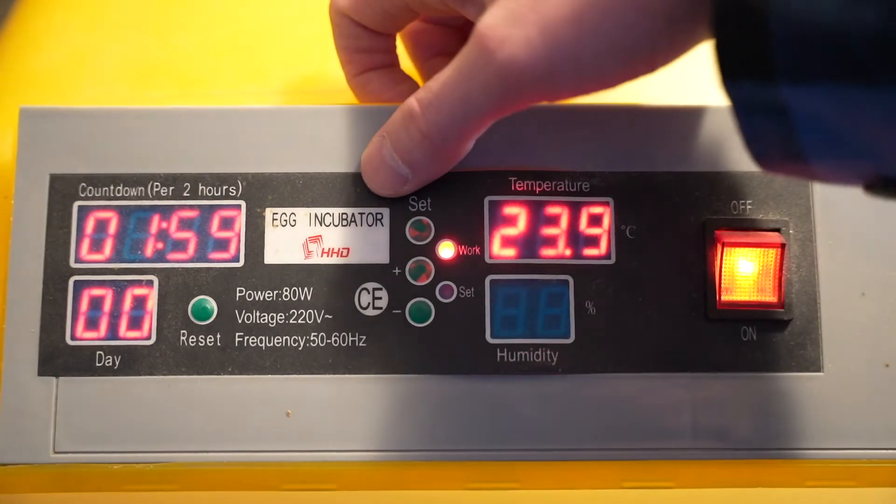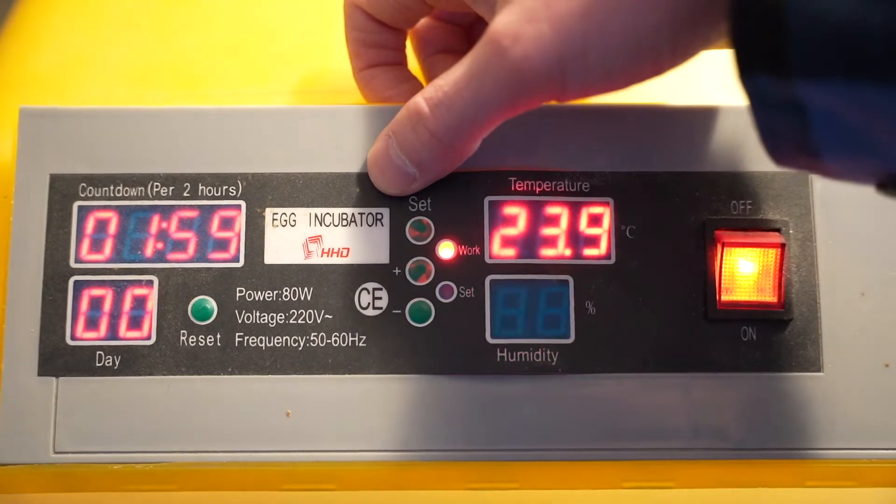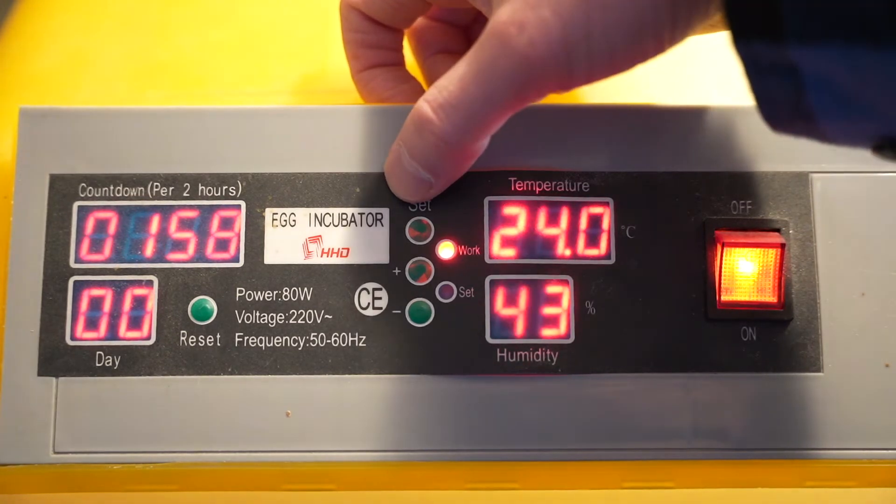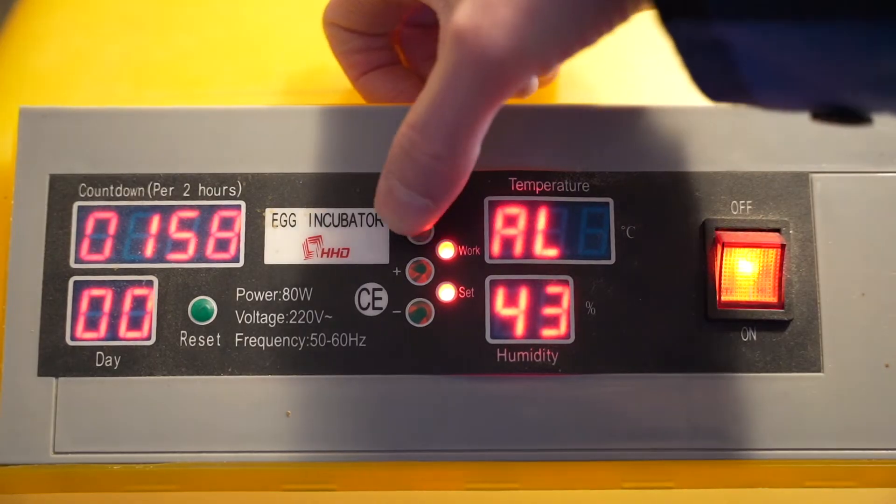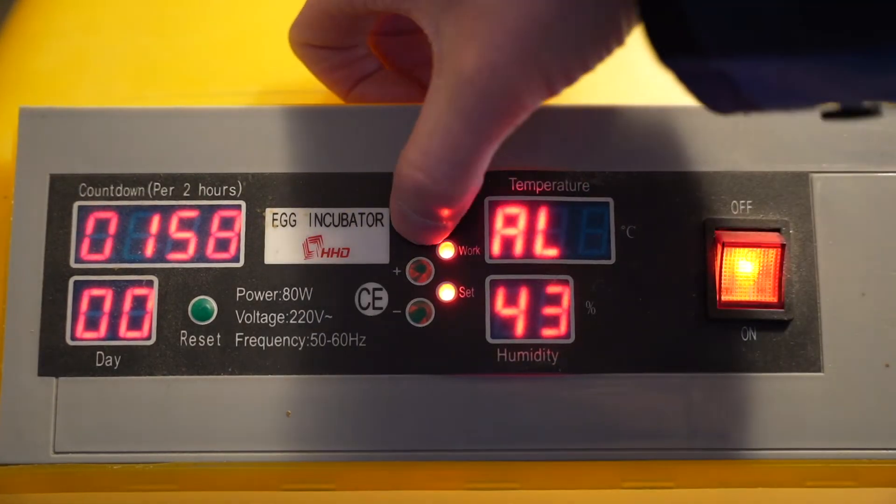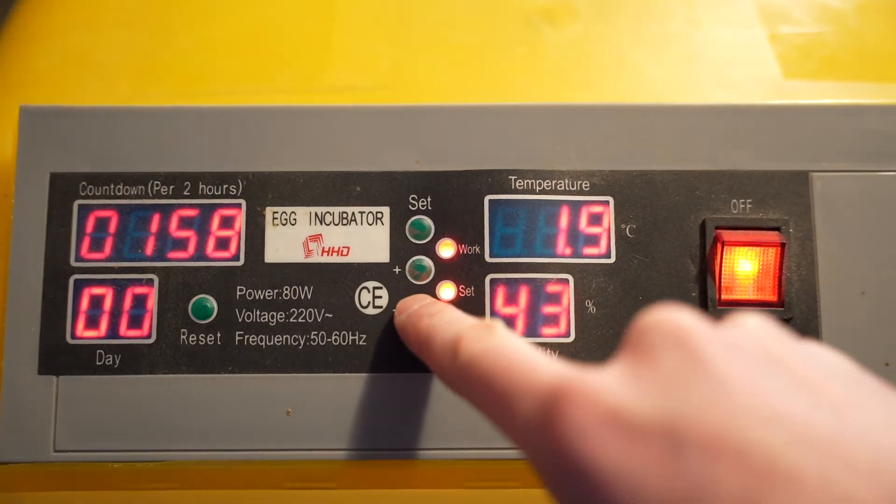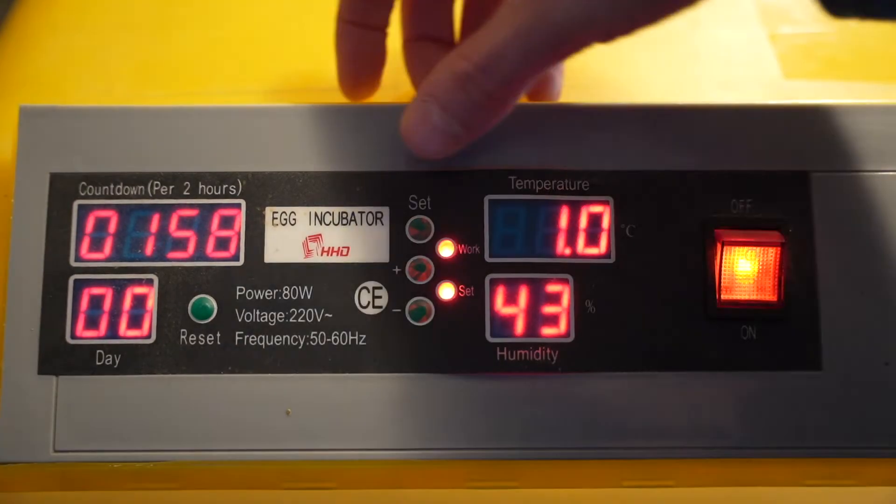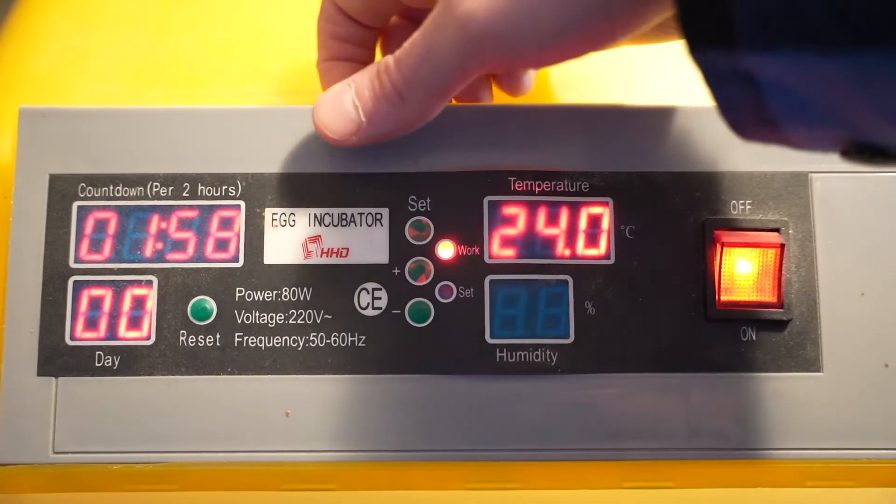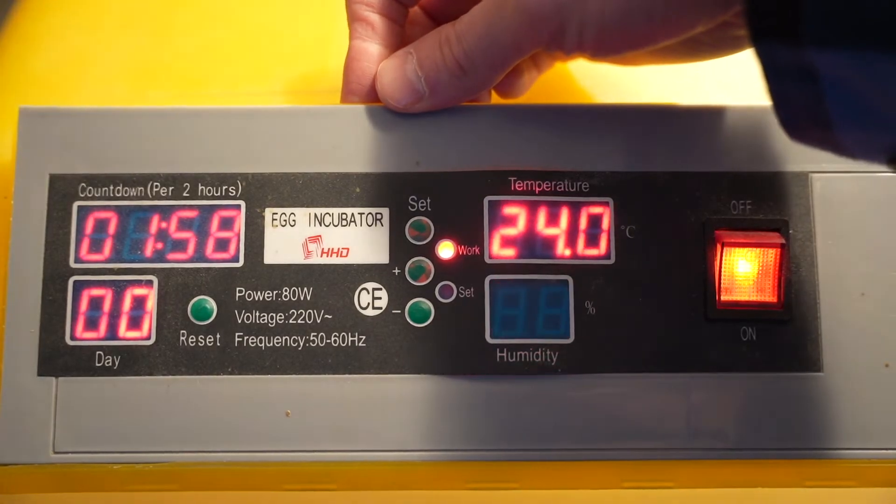So now let's get into the menu and set an alarm for too low or too high temperatures. For that we need to hold the set button for three seconds and now you see the alarm for low temperatures. Press the set button again and now we can set it to for example one degree. So the alarm is ringing if the temperature gets one degree below 37.8.